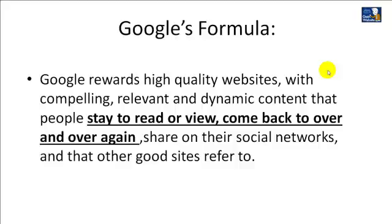I'm going to continue where I left off. In the first video, I revealed Google's formula, which is that Google rewards high quality websites with compelling, relevant, and dynamic content that people stay to read or view, come back to over and over again, share on their social networks, and that other good sites refer to. I'm covering every element of this formula in all my videos. In the second video, I showed you what a high quality website is in the eyes of Google. And then in the third video, I revealed what is compelling, relevant, and dynamic content.